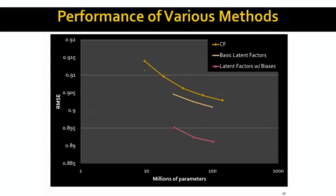So here is a slide showing how well these things work. So here I'm comparing, for example, collaborative filtering with the basic latent factors that we talked about in the previous video, and with latent factors that also include biases. And what I'm showing you here is root mean square error. And here is the number of millions of parameters my model has.